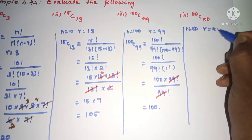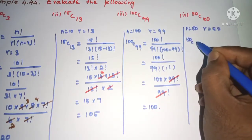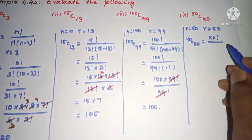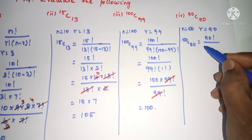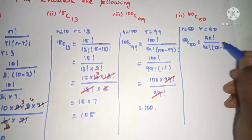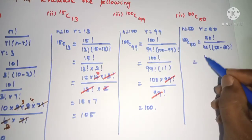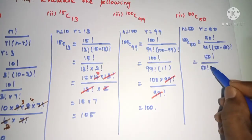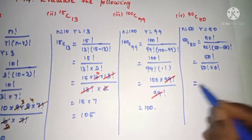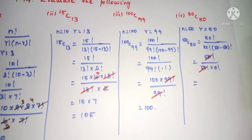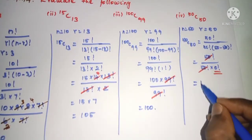Now n is equal to 50, r is also 50. Therefore, 50C50 is equal to 50 factorial divided by 50 factorial into 50 minus 50 factorial, which is 50 factorial into 0 factorial. So 50 factorial will cancel. We know 0 factorial is 1, so 1 by 1, we get 1.